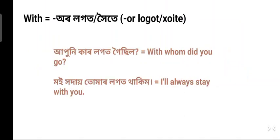Next: 'with' in Assamese — 'লগত' (logot) or 'খিতে' (khwite). 'Logot' is more common in spoken Assamese; in written Assamese both are equally common. Example: 'Apuni karlogot goisil?' — With whom did you go? 'Apuni' means you (honorific), 'karlogot' means with whom, and 'goisil' means you went.